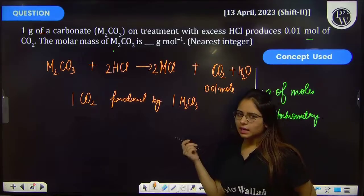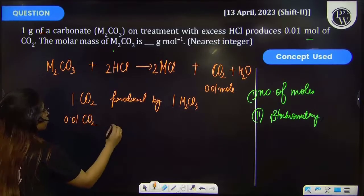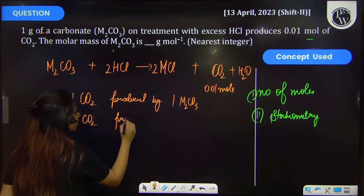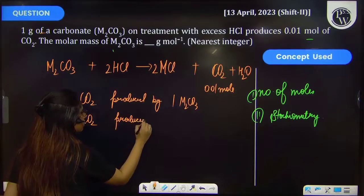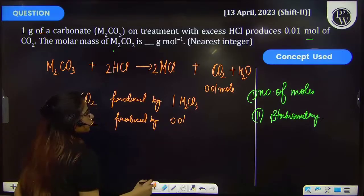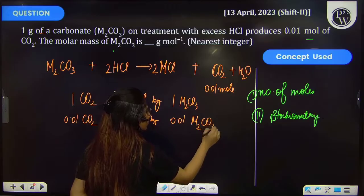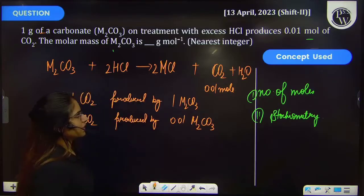of CO₂ will be produced by 0.01 mol of M₂CO₃. So these are the number of moles.